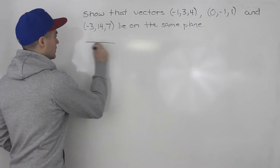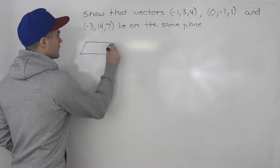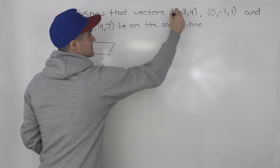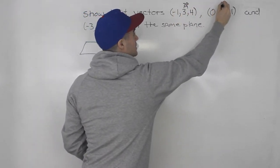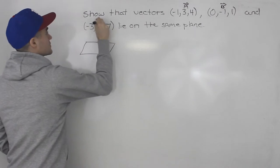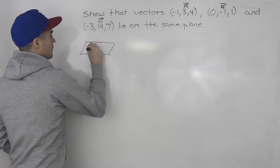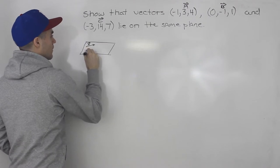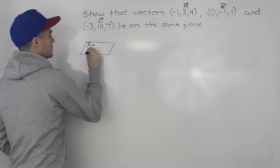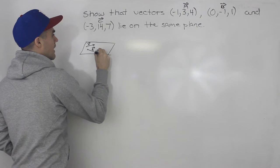So the way it looks visually, we got to show that these three vectors, let's say this is vector a, this is vector b, and then this one is vector c, we got to show that all three vectors are going to be co-planar or they lie on the same plane.